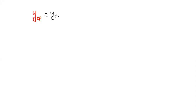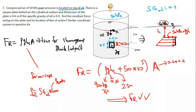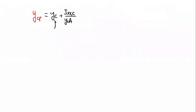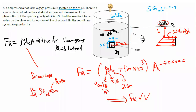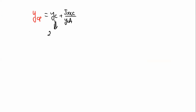So ycp equals yc plus Ixxc divided by (yc times area). The yc distance we found in the last lecture. The yc value - we found it was 2 plus 0.3, which was 2.3 meters. That was the yc distance.